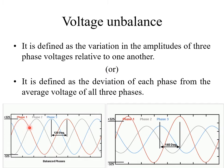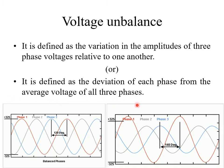In this picture, there are three phases — phase 1, phase 2, and phase 3. The magnitude of all phases is the same, and the phase difference is also the same at 120 degrees. Therefore, this is called a balanced system. In the second picture, the amplitude of phase 1 is different from phase 2 and phase 3, and the angle is 140 degrees, so this is an unbalanced system. Voltage unbalance can also be defined as the deviation of each phase from the average voltage of all three phases.